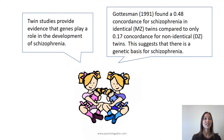Twin studies provide evidence that genes play a role in the development of schizophrenia. Gottesman, 1991, found a 0.48 concordance for schizophrenia in identical or monozygotic twins, compared to only 0.17 concordance for non-identical or dizygotic twins. This suggests that there is a genetic basis for schizophrenia, as monozygotic twins who share 100% of the same genes had a high concordance rate — meaning if one had schizophrenia, there was a higher chance the other would too.